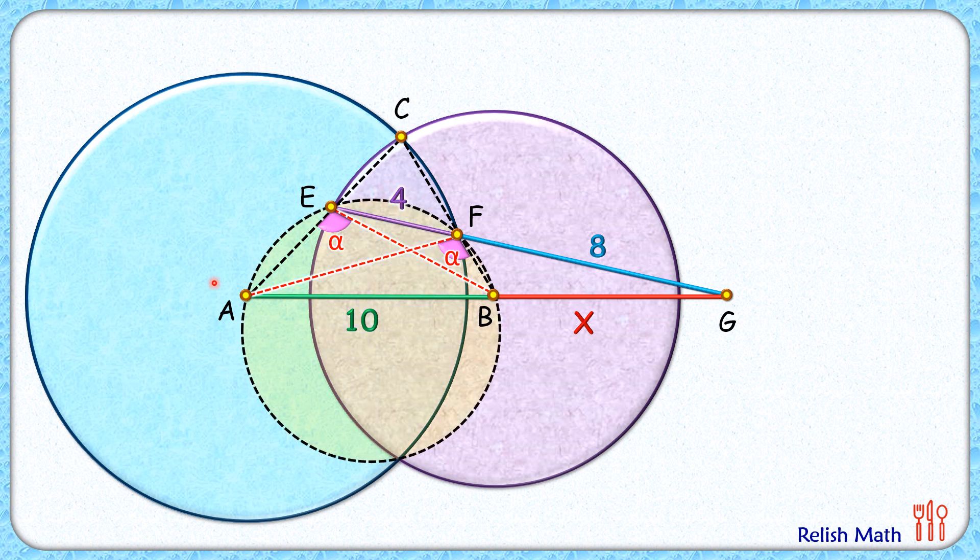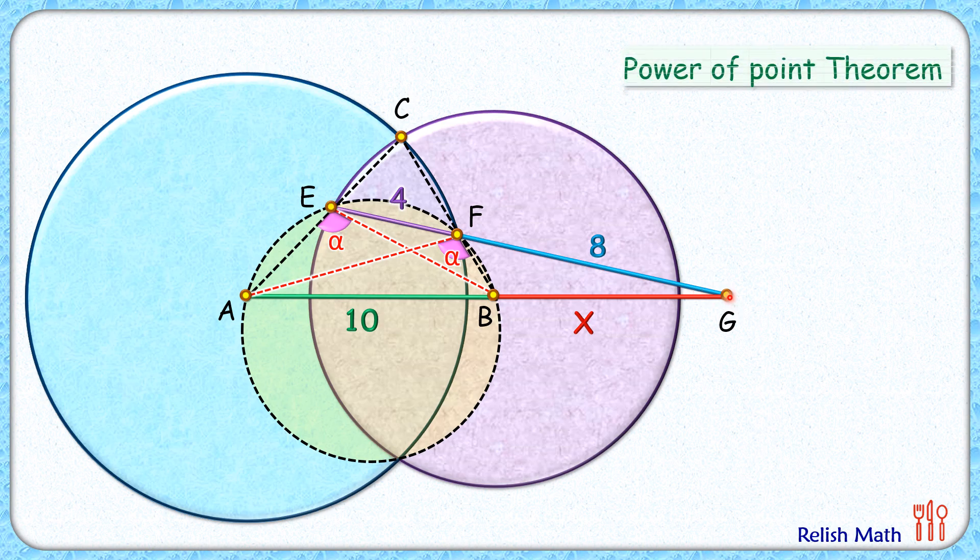Now with respect to this yellow circle, if you look carefully, GA and GE are secants meeting at point G. So by the power of a point theorem, we can say that GB times GA equals GF times GE.